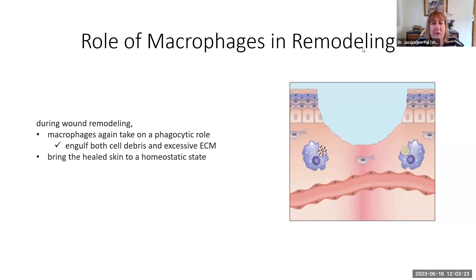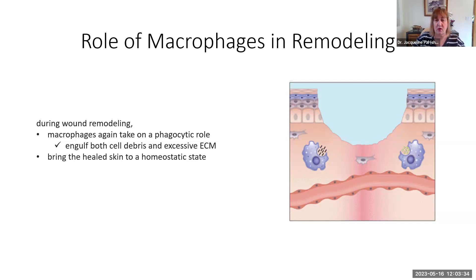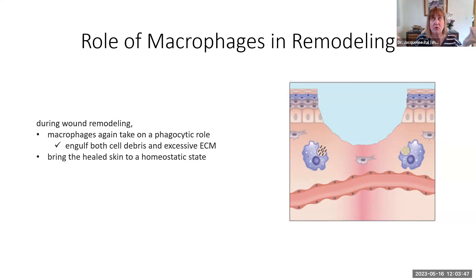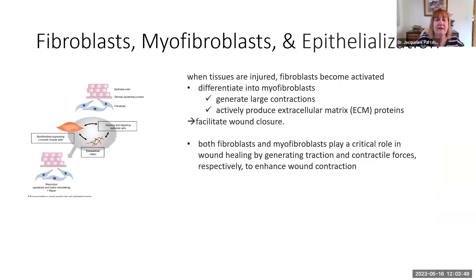Let's look in more detail at some of the things that are happening. The macrophages - the monocytes that have become macrophages - are still hanging around but changing their role. Now they're going to become vasostatice again and trying to get rid of extra cells that aren't needed anymore, so hopefully we can go back into that homeostasis phase.